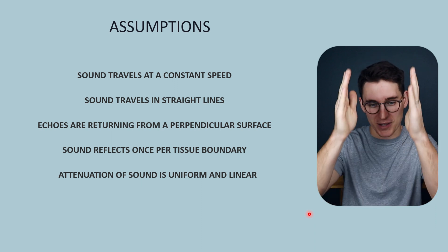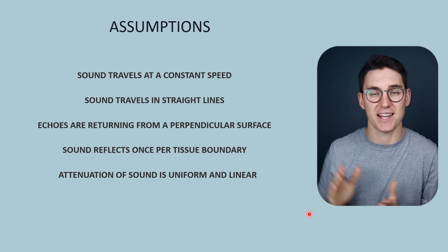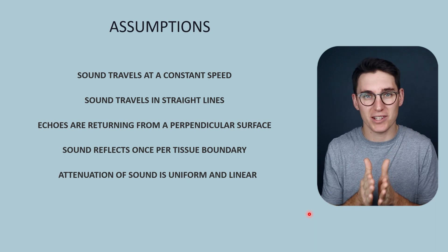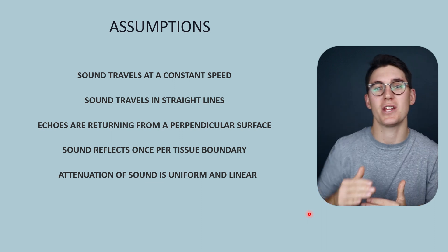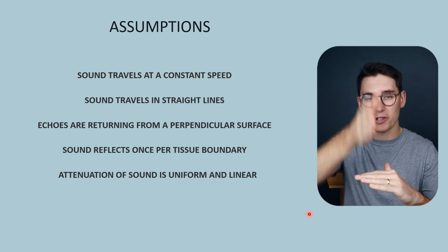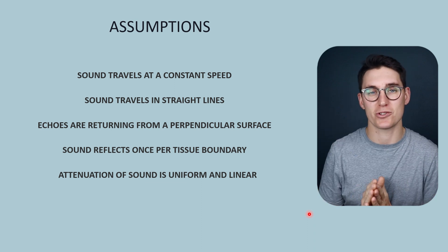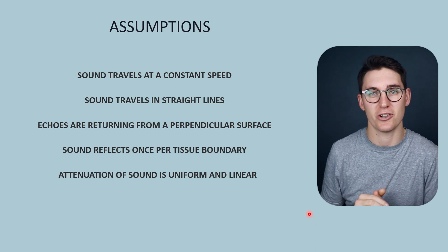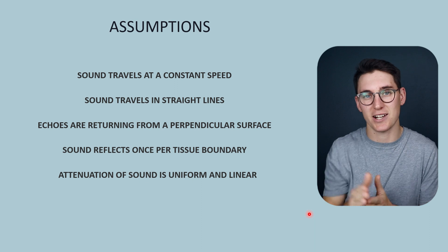We also assume that sound travels in straight lines, but we've seen sound reflecting off surfaces at angles and sound refracting, so it isn't actually traveling in a straight line. It also assumes that echoes returning to the ultrasound machine have returned from a perpendicular surface, congruent with the initial pulse sent out — which isn't always the case. We can get scattered echoes, or echoes bouncing off an object and returning. The machine assumes those returning echoes came from the A-line in which it sent the pulse.